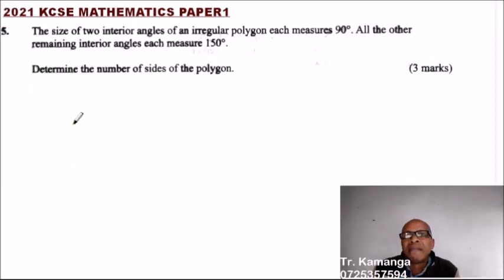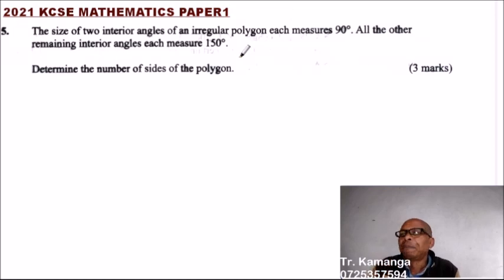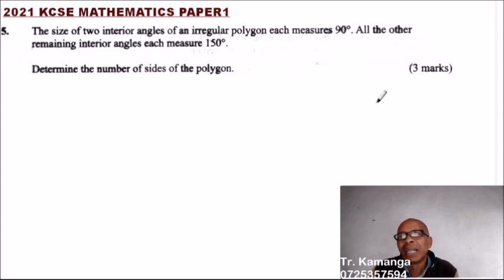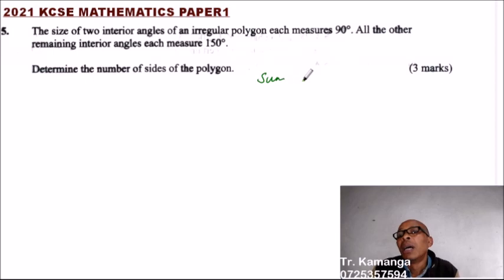Question number 5. The sizes of two interior angles of an irregular polygon each measure 90 degrees. All the other remaining interior angles each measure 150 degrees. Determine the number of sides of the polygon for 3 marks. What you should remember from form 2 is that the sum of the interior angles equals 2n minus 4, multiplied by 90 degrees.